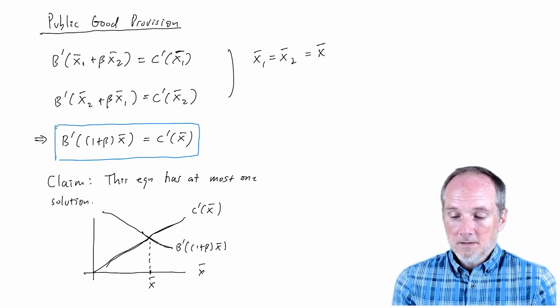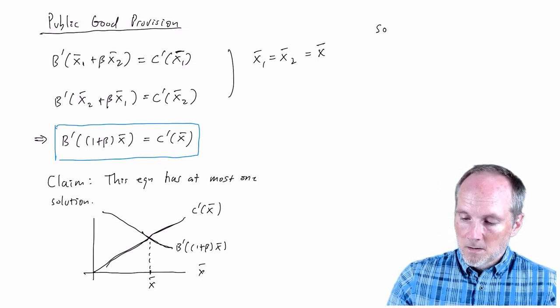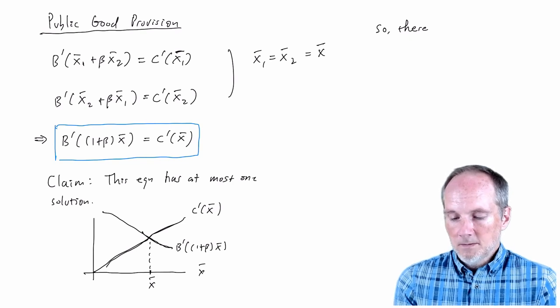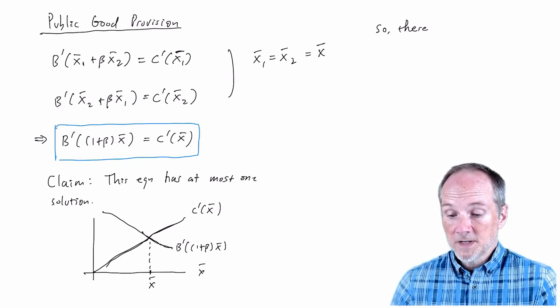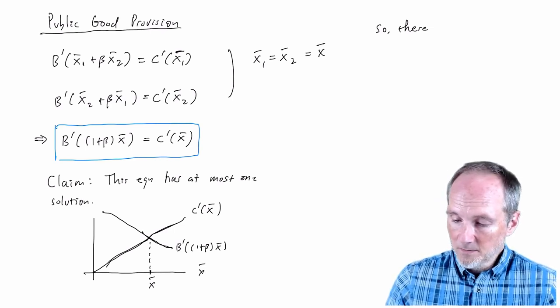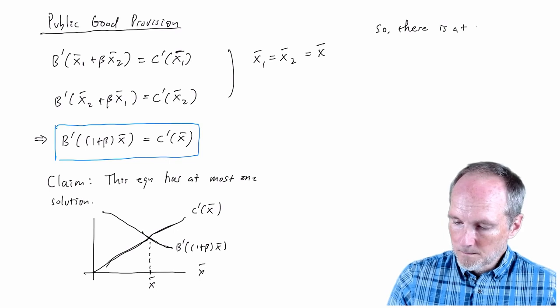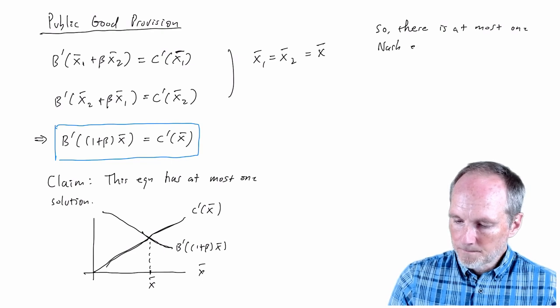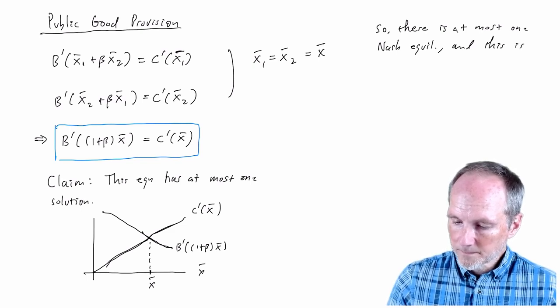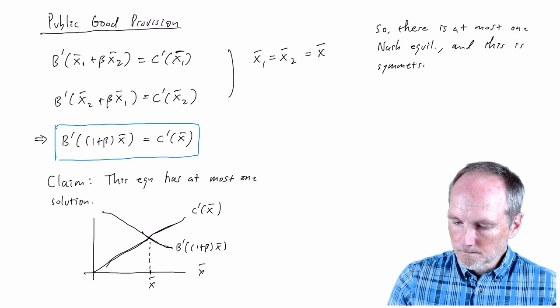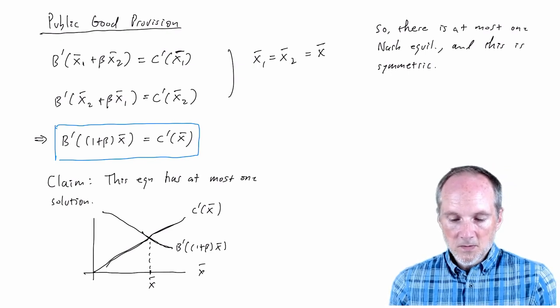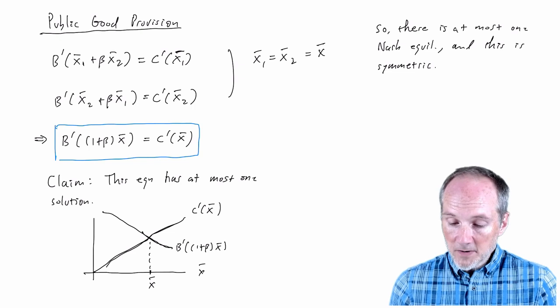So in fact, there is at most one symmetric Nash equilibrium. Again, we can impose more structure to make sure there is one. So basically there's a unique equilibrium in this model. So we've shown there's at most one Nash equilibrium, and this is symmetric. All right, and I'll use that x bar notation to denote that equilibrium activity level.